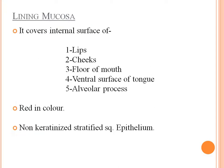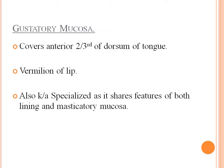Lining mucosa covers the internal surface of the lips, cheeks, floor of the mouth, ventral surface of the tongue, and alveolar process. It is red in color, non-keratinized stratified squamous epithelium, whereas the masticatory mucosa is keratinized. The gustatory mucosa covers the anterior two-thirds of the dorsum of the tongue and the vermilion of the lip. It is also known as specialized mucosa as it shares features of both lining and masticatory mucosa.